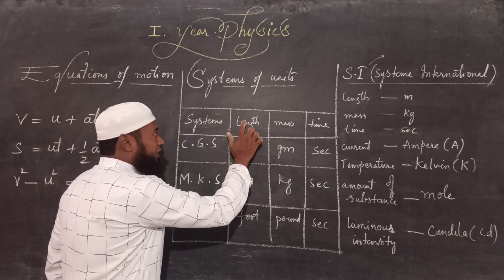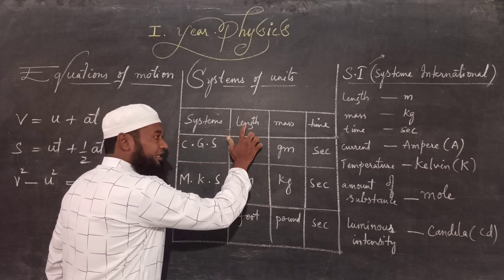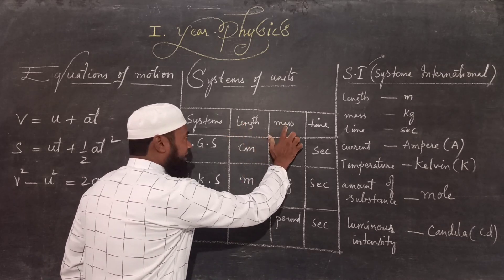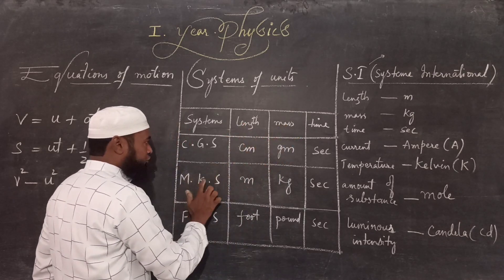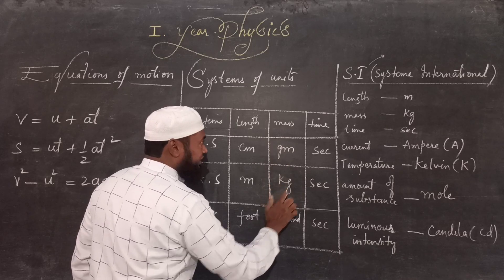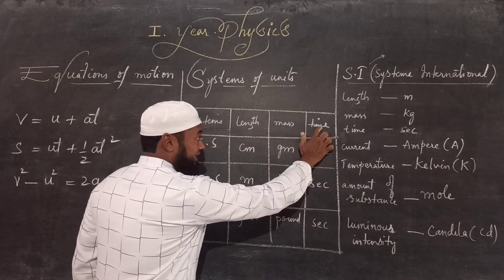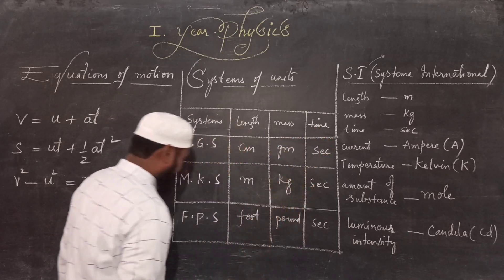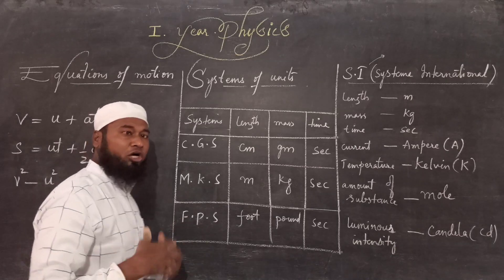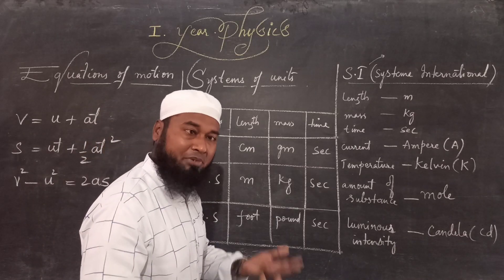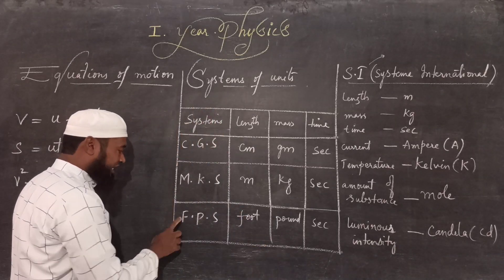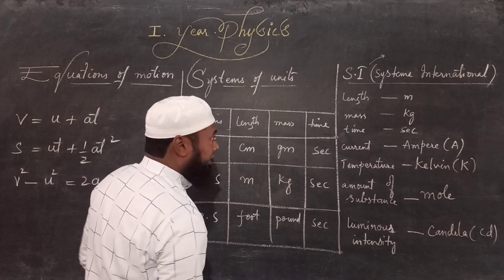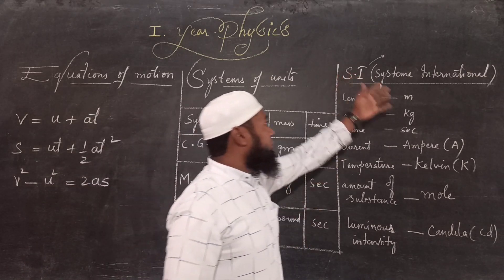In MKS, M stands for meter. So for length, the MKS unit is meter, denoted by m. For mass, the MKS unit is kilogram, denoted by kg. For time, the MKS unit is second, denoted by s. Similarly, there is FPS — not used much, but it is also there in systems of units. FPS stands for Foot, Pound, and Second.